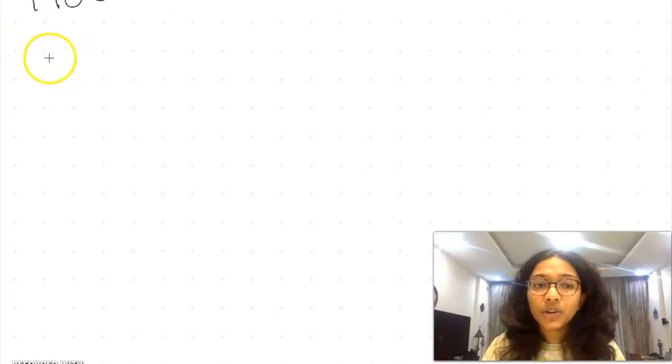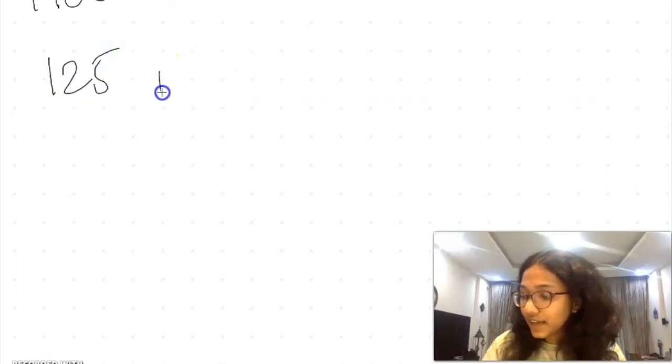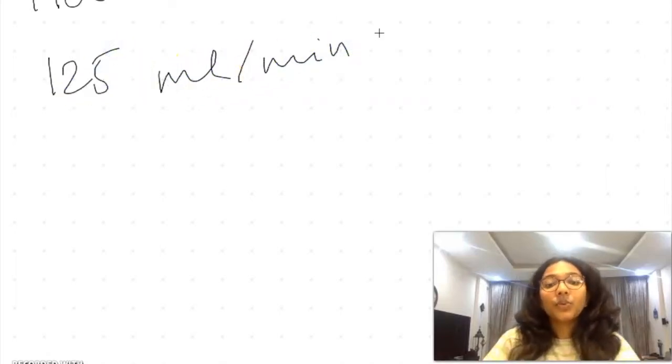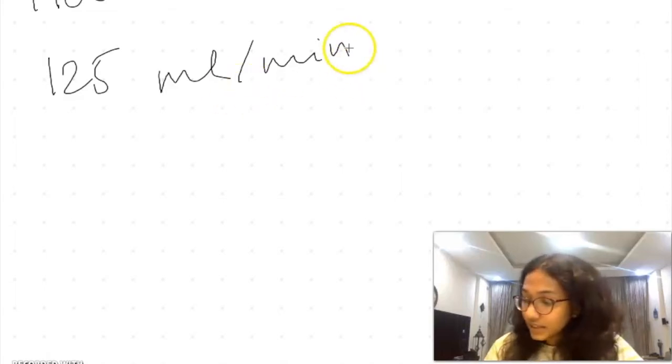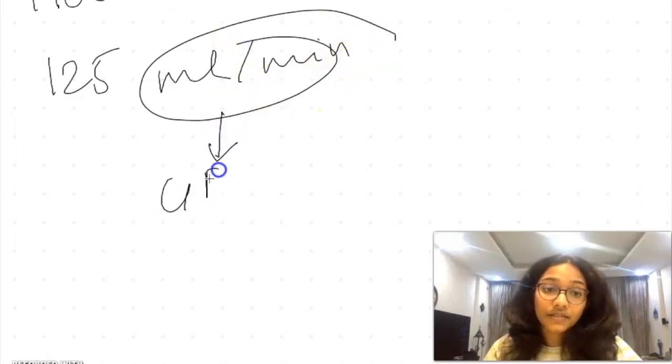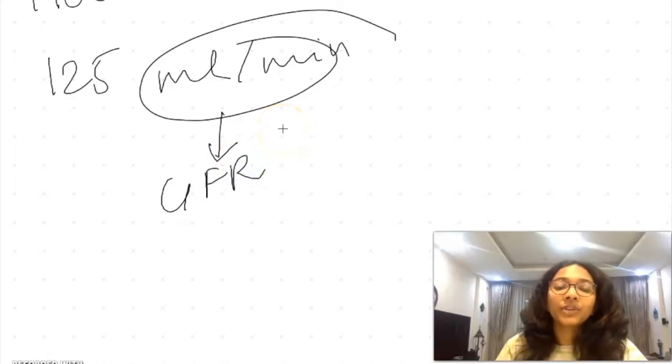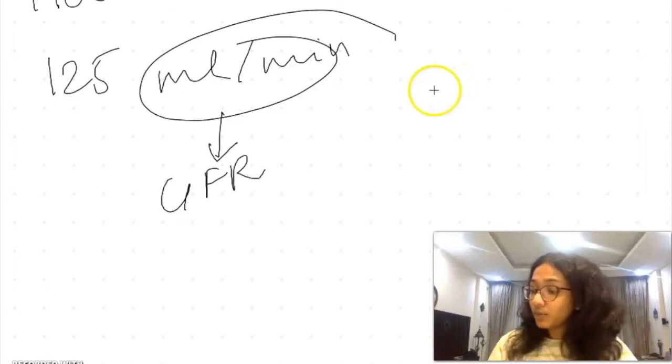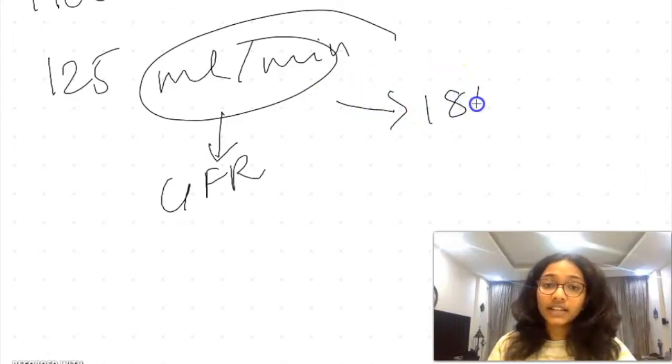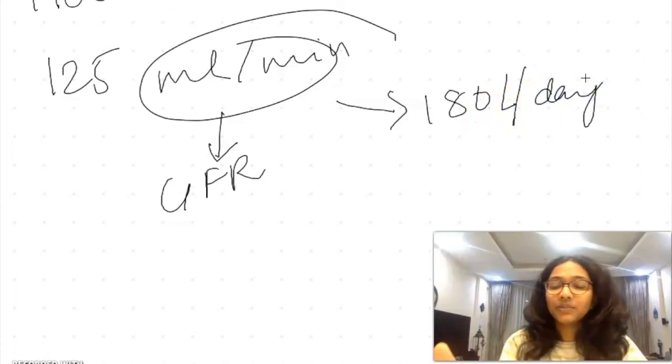When this is filtered out, the amount of plasma or glomerular filtrate that comes out per minute is 125 ml per minute. This is also known as GFR or glomerular filtration rate. If you take this estimate, this will almost make 180 liters per day.